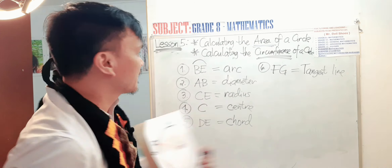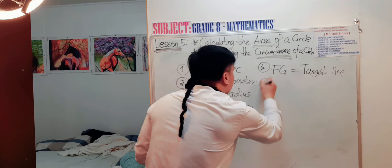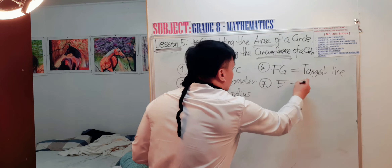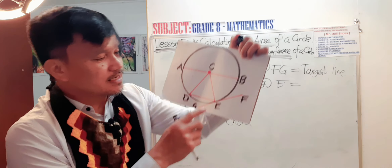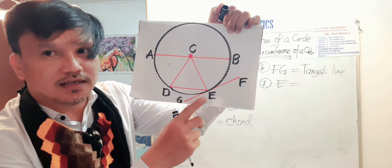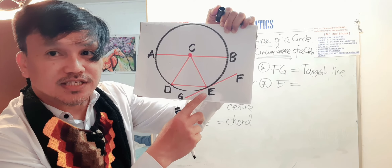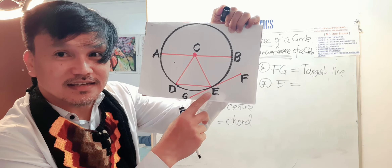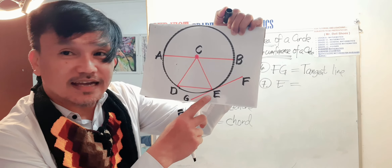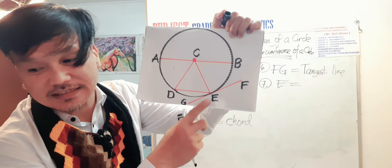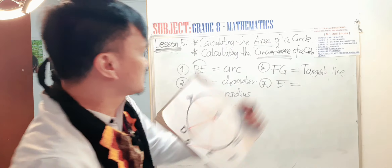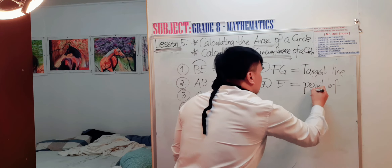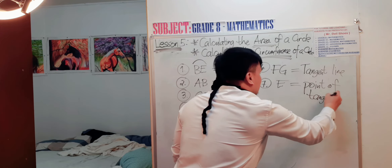Question number seven: what does point E called in this part of the circle? Point E is called the point of tangency.